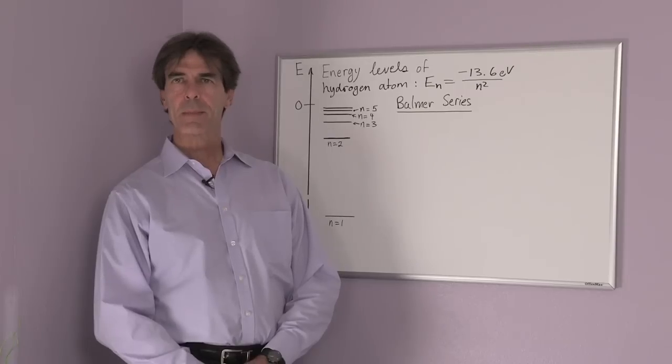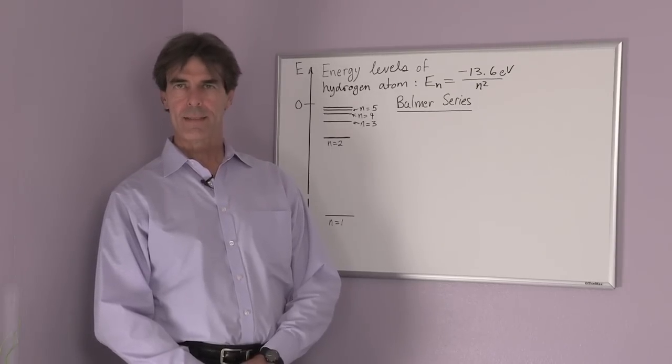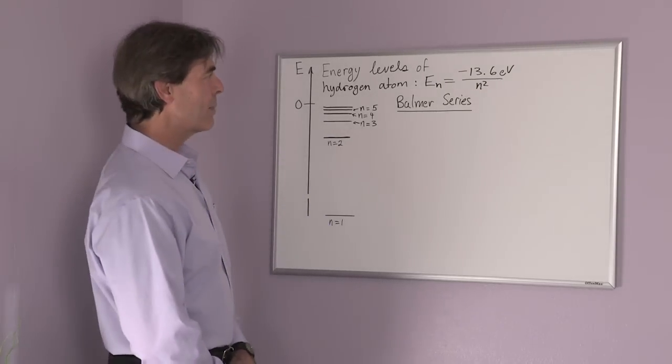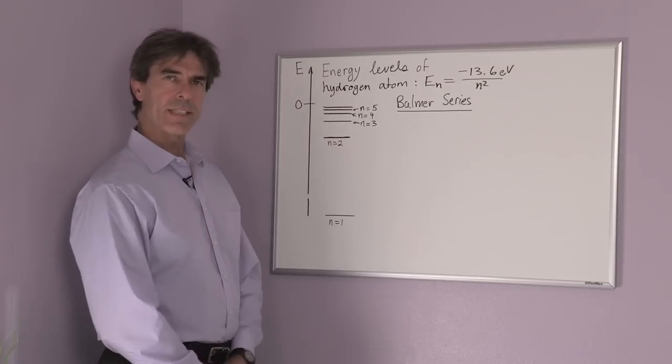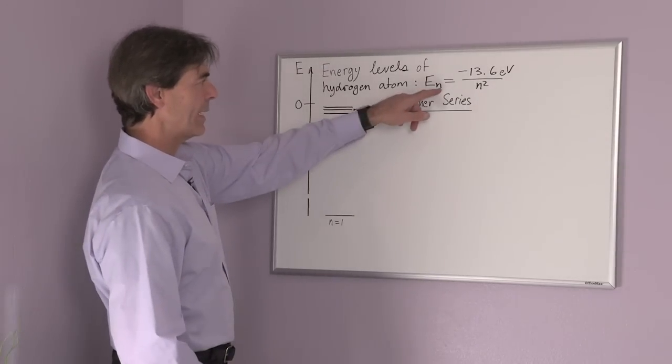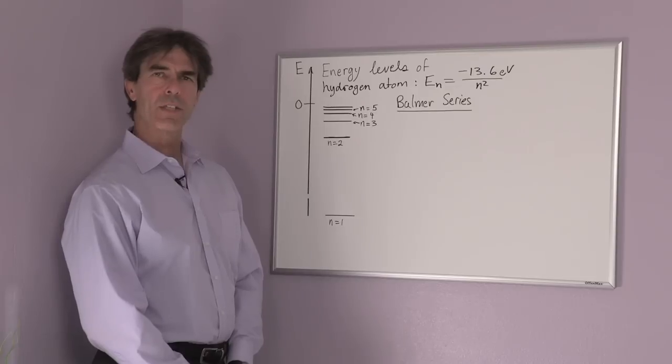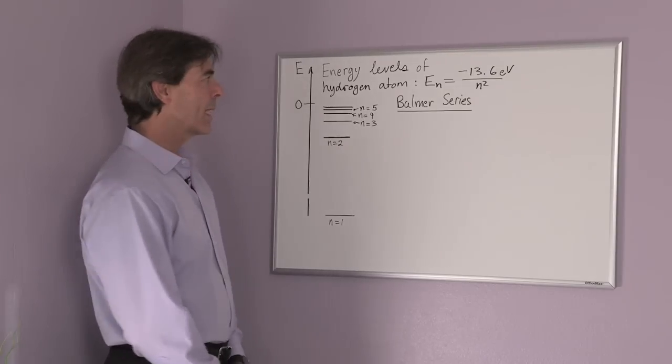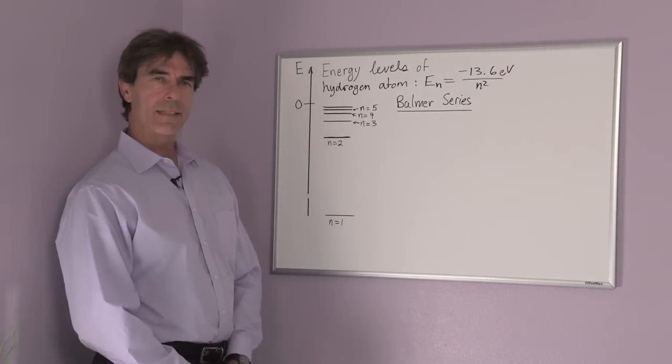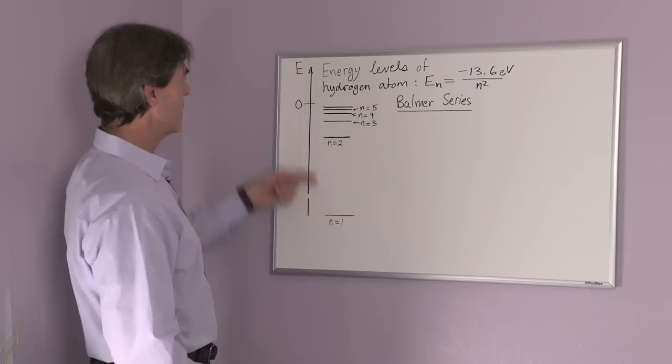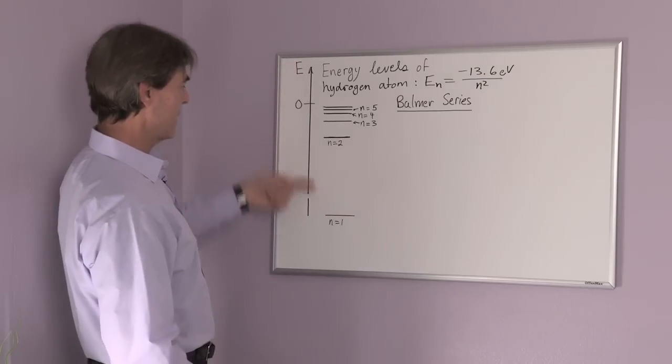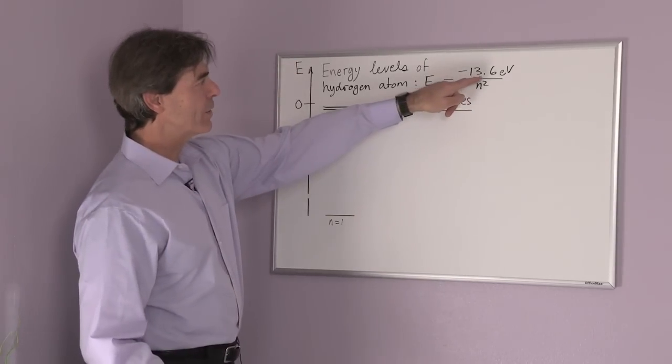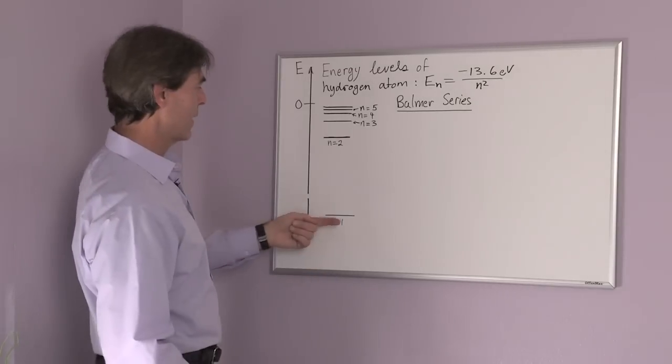This atom can be in discrete energy states, and we describe the discrete energy states by the quantum number n, where n is equal to one, two, three, four, and so on. The lowest energy state is n equals one, so if I look at the energy, it's minus 13.6 electron volts for n equals one.